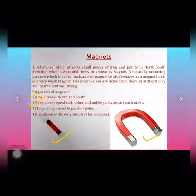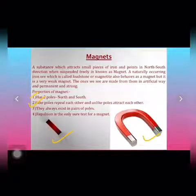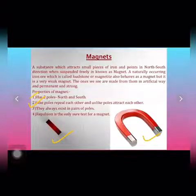This property is similar to electric charges — same charges repel each other and unlike charges attract each other. In the same way, like poles repel each other and unlike poles attract each other in magnets. This means the north pole of a magnet repels the north pole of another magnet, but the north pole of a magnet attracts the south pole of another magnet.